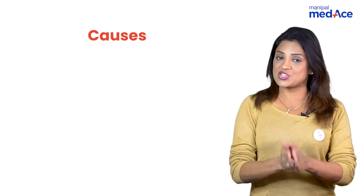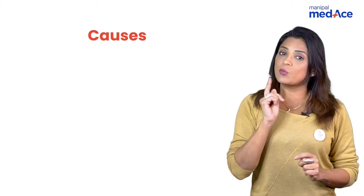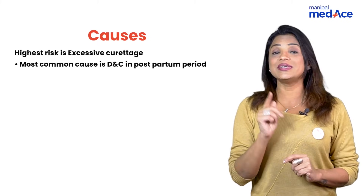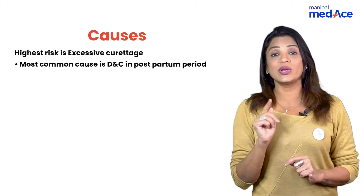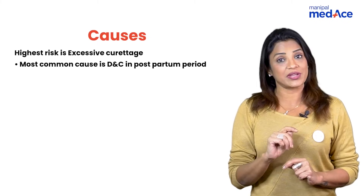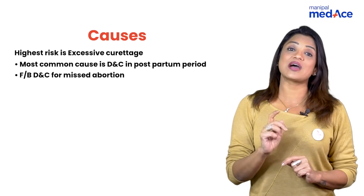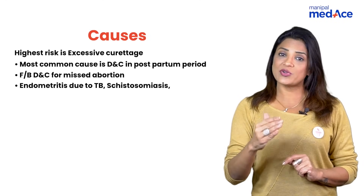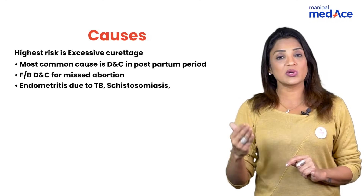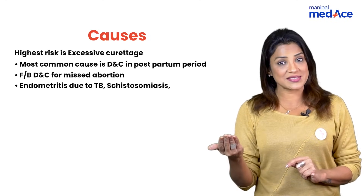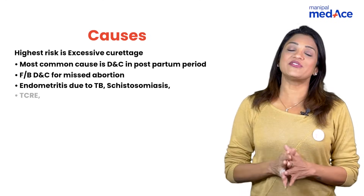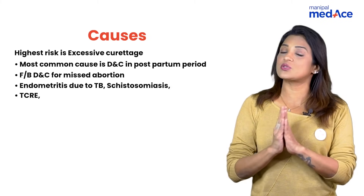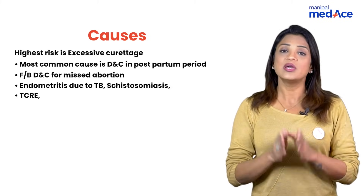What are the basic causes of Asherman's syndrome? The most important cause is doing a D&C, that is curettage after delivery. Second cause is doing a curettage after miscarriage. Third can be endometritis due to tuberculosis or schistosomiasis. Fourth can be trans-cervical resection of endometrium, which is done for DUB but is not done anymore.